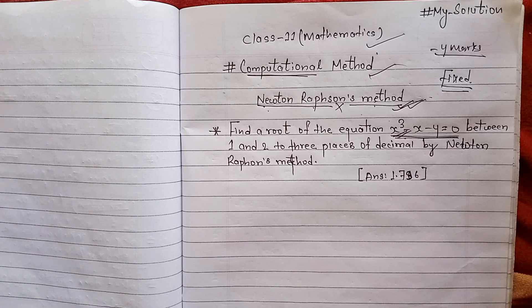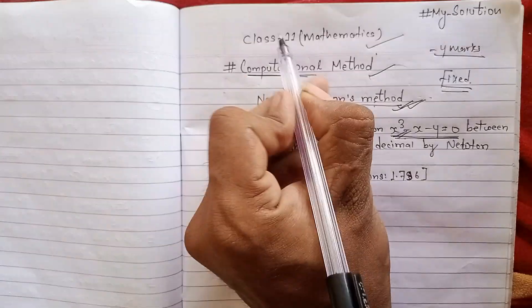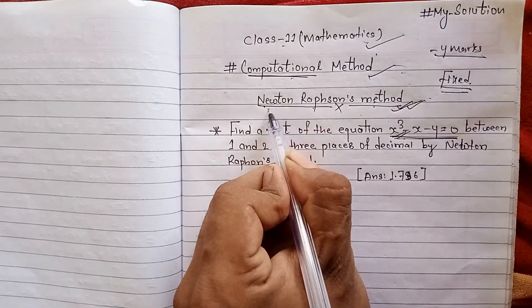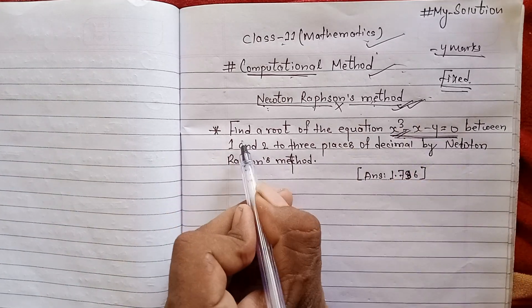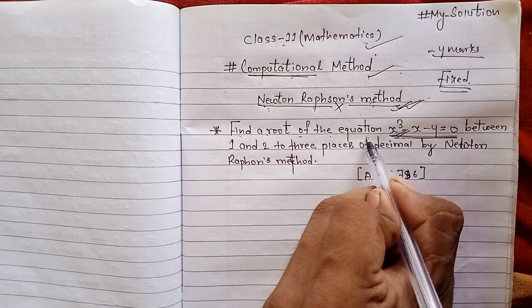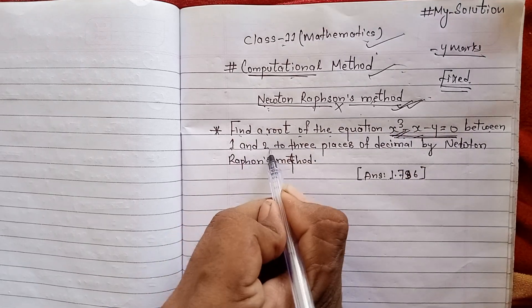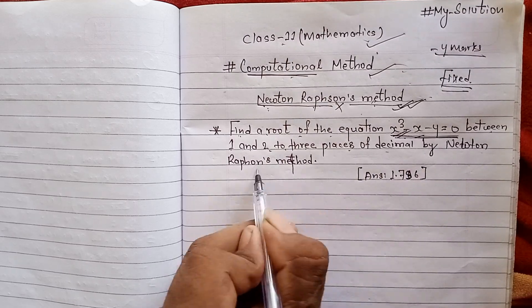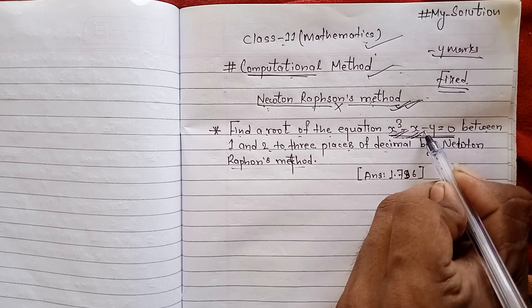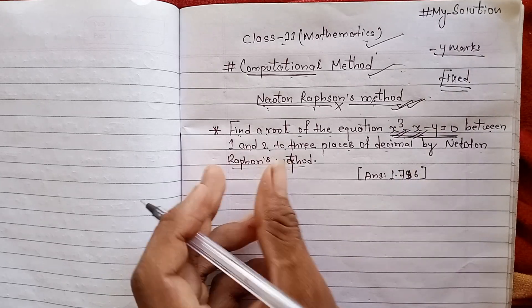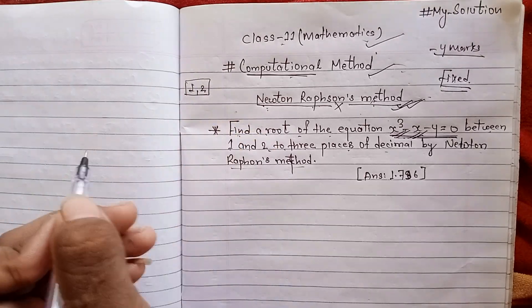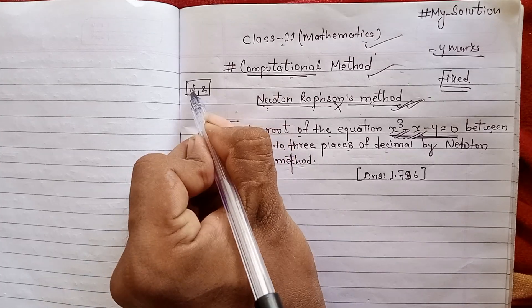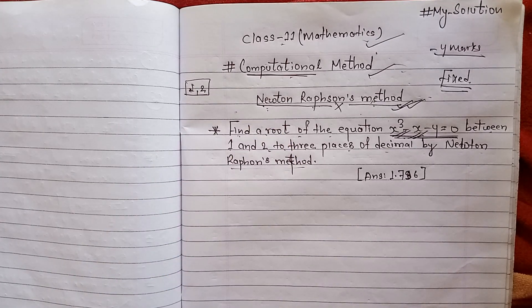I'm happy to introduce you to the graph. Using Newton-Raphson's method, you can find the root. The root lies between 1 and 2, and we work toward finding the answer to 1-2 decimal places.